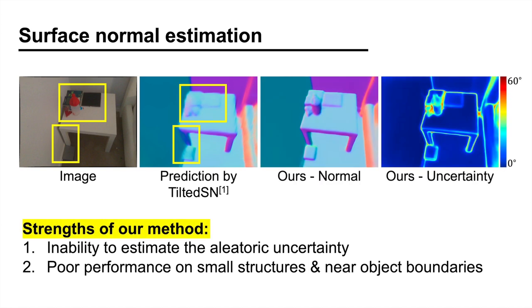Here is the prediction made by our method. You can see that our method is able to estimate the uncertainty, and that the prediction contains a higher level of detail where small objects and object boundaries are clearly visible.